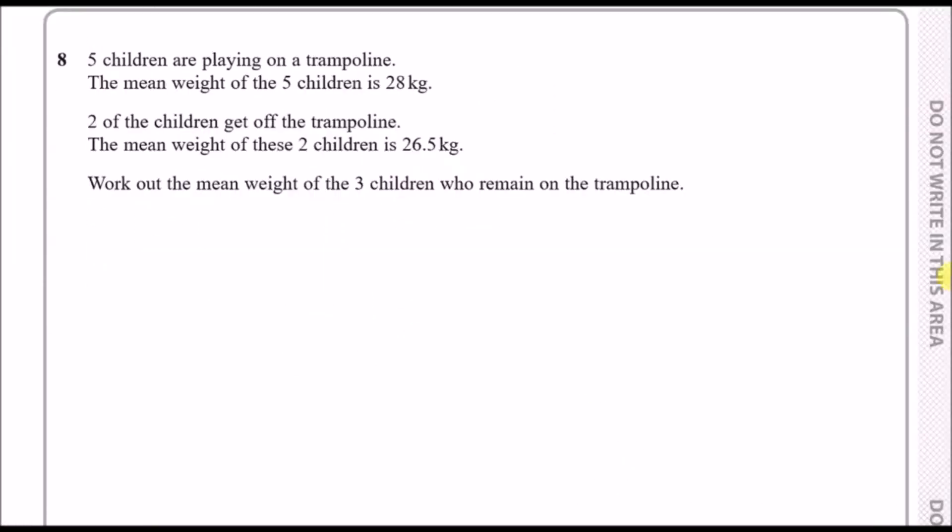Question eight: five children are playing on a trampoline. The mean weight of the five children is 28 kg. Before we read on this implies that because every single child is about 28 kg, this means that the total of five children is actually 5 times 28 kg. Doing that will give you a total weight of 140 kg for those five children.